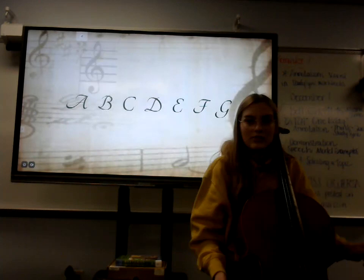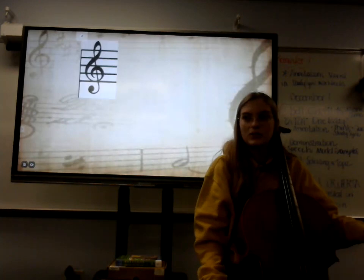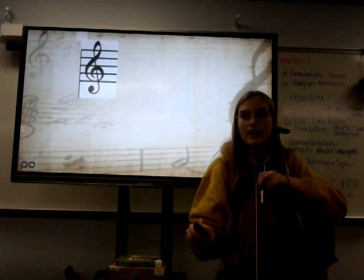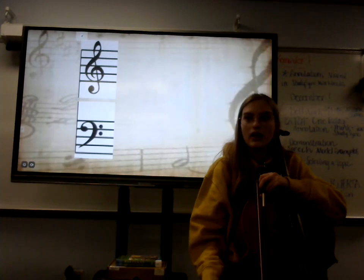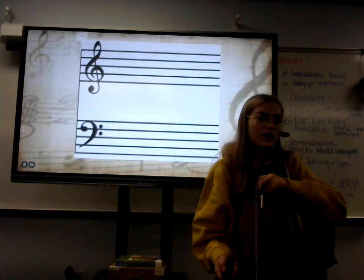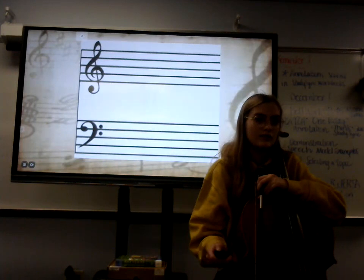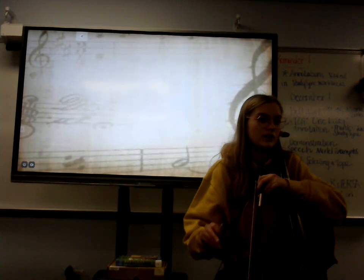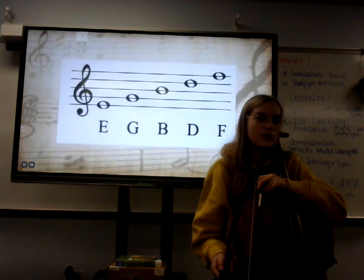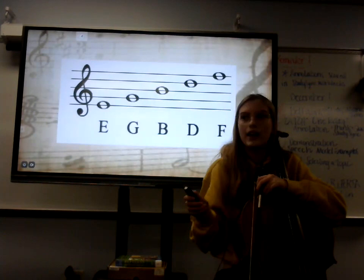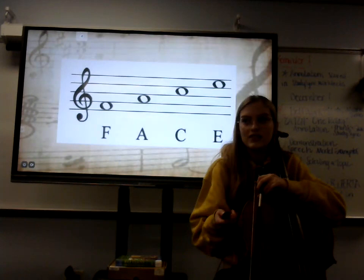When it comes to notes, you have two clefs which determine what your notes are: treble, or the high clef, and bass, or the low clef. All clefs come with the staff, which is five lines and four spaces, each representing a note. Treble clef notes on lines going from bottom to top are E, G, B, D, F — or you can remember it as 'Every Good Boy Does Fine' — and the spaces are F, A, C, E, or simply 'FACE.'